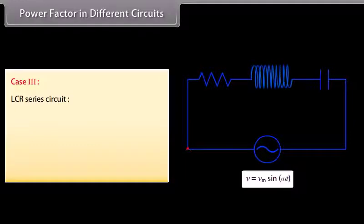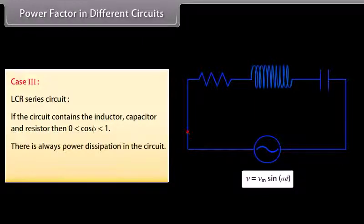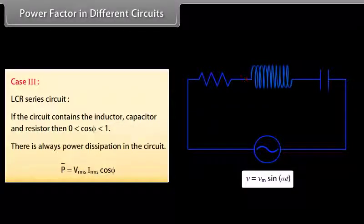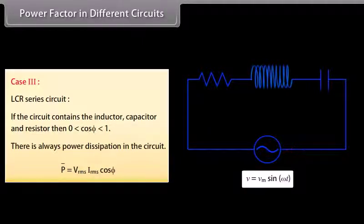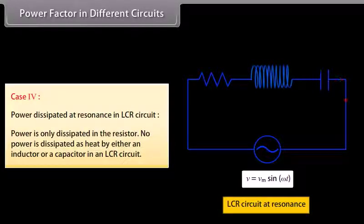Case 3, LCR series circuit: cos φ lies between 0 and 1, and there is always power dissipation: P̄ = Vrms × Irms × cos φ. Case 4, Power dissipated at resonance in LCR circuit: Power is only dissipated in the resistor. No power is dissipated as heat by either the inductor or capacitor in an LCR circuit.